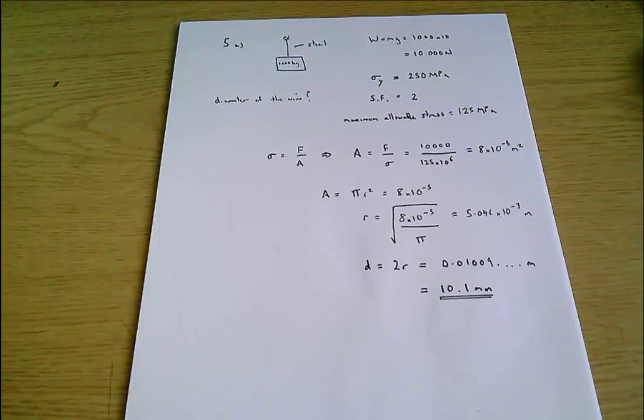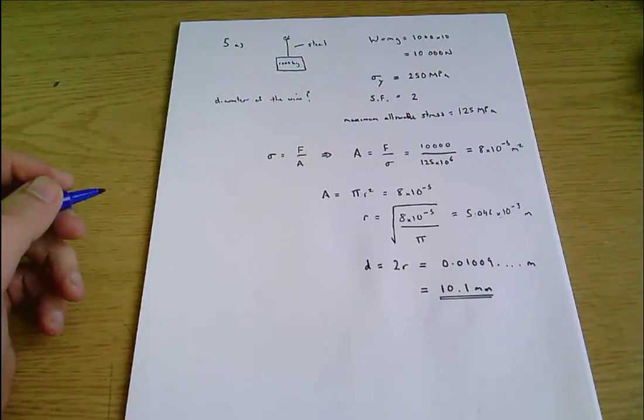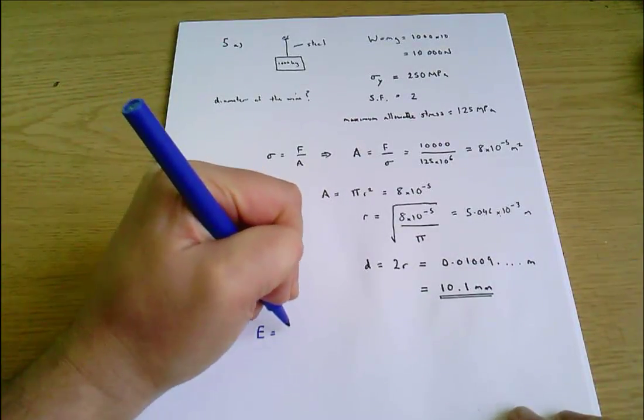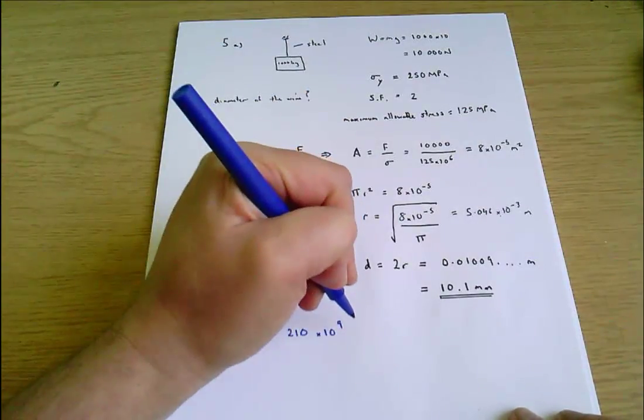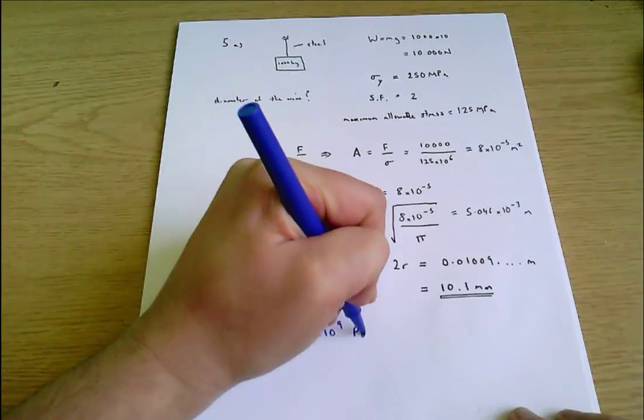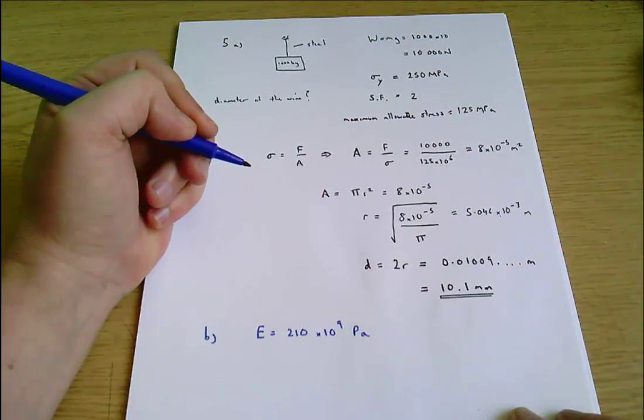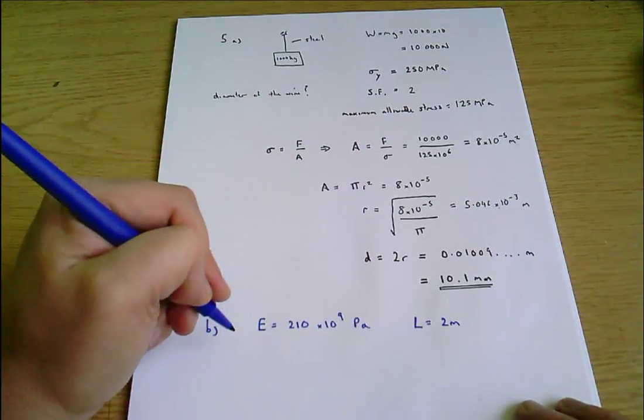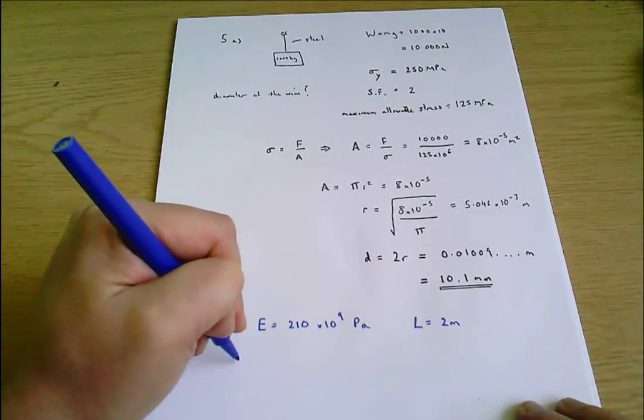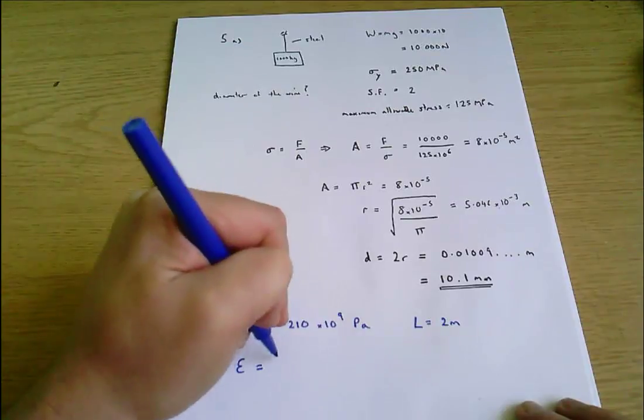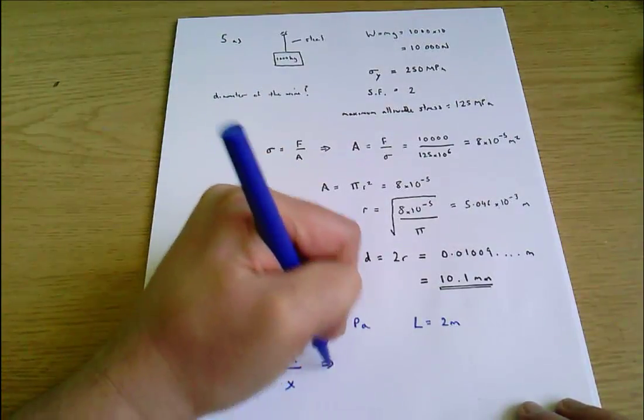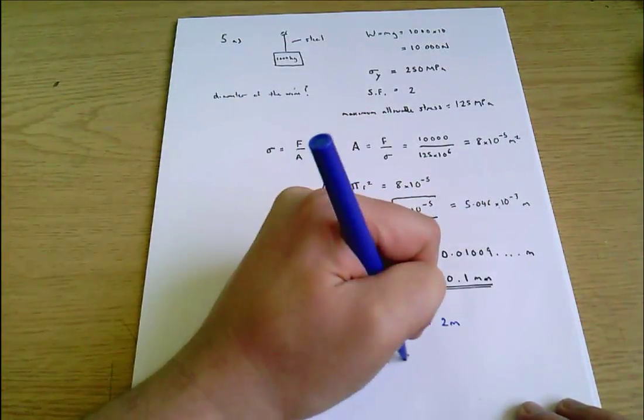Okay, part B says the cable is 2 meters long. Calculate the extension of the cable due to the load. Assume the Young's modulus E equals 210 gigapascals - that's 210 times 10 to the 9 pascals. And we've got that the length equals 2 meters. What we want to know is the extension of the cable. It's just worth remembering a couple of definitions here. Strain is the extension or the change in length divided by the original length, and therefore delta x is going to be strain times original length.